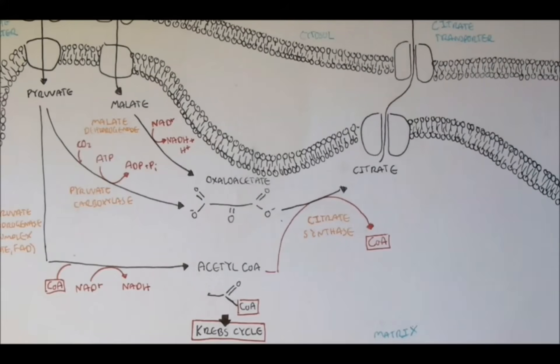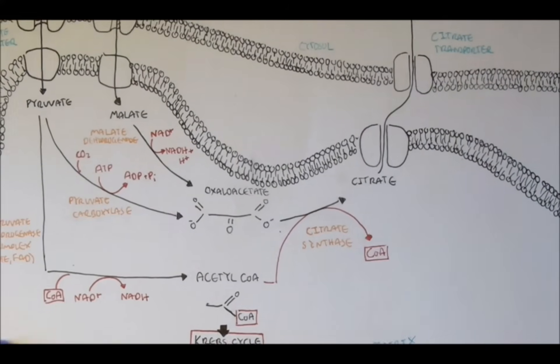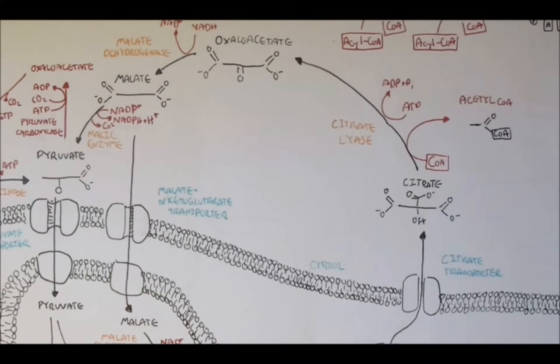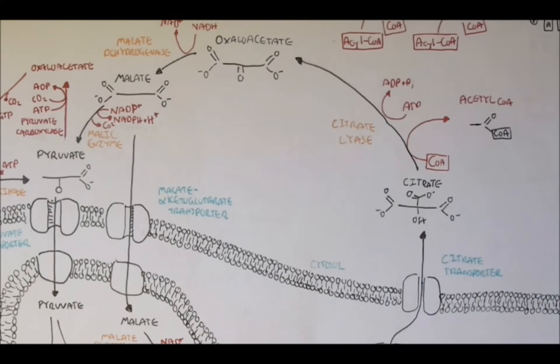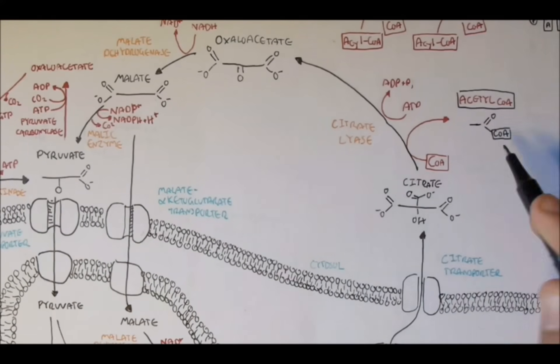Now, so we saw how acetyl-CoA from the matrix is transported to the outside through citrate. Now, it can continue on to fatty acid synthesis, which is our next topic of the series.